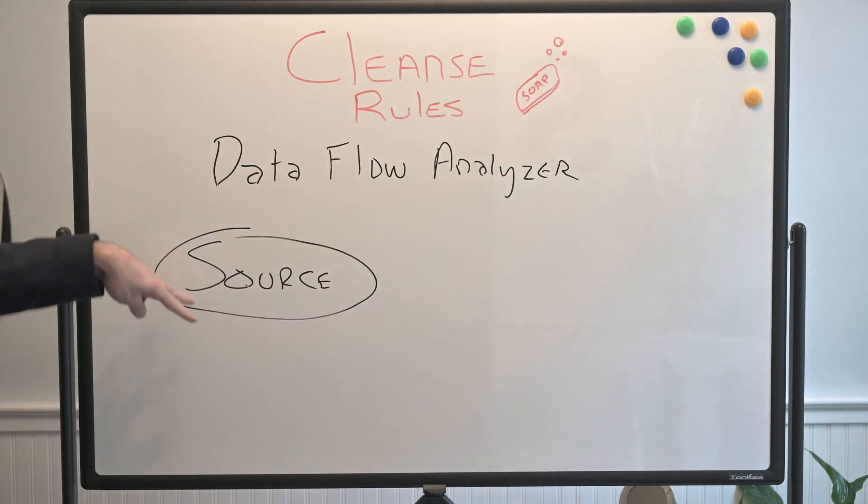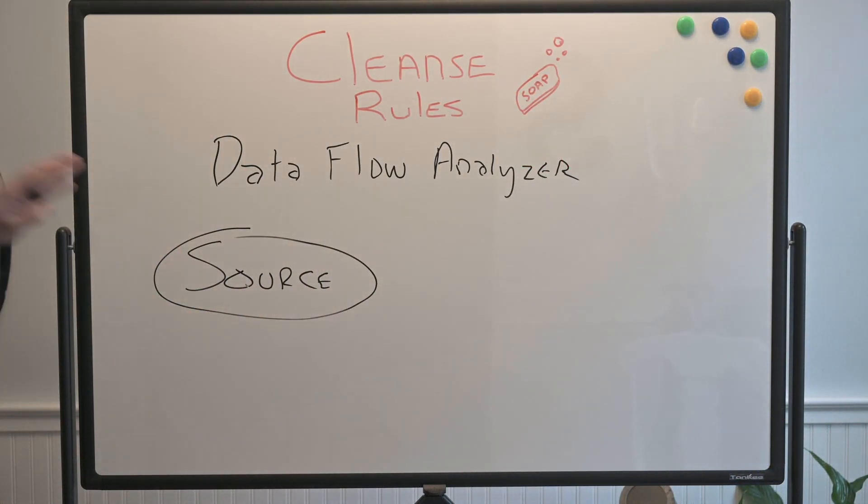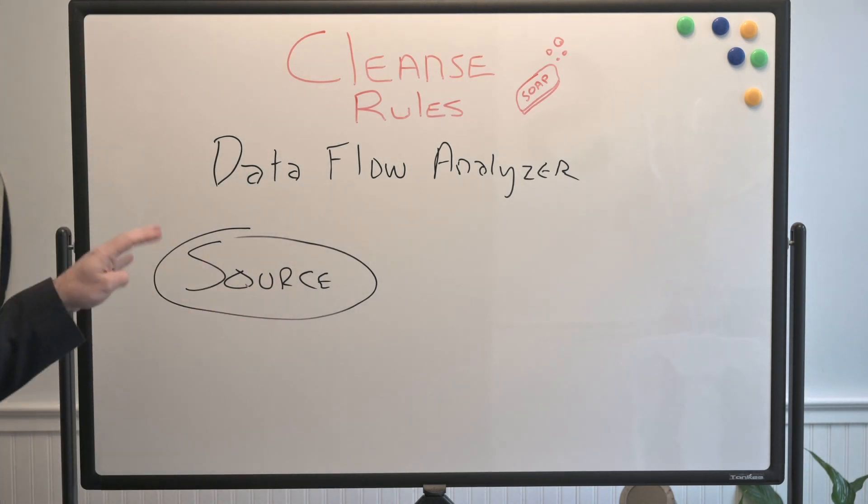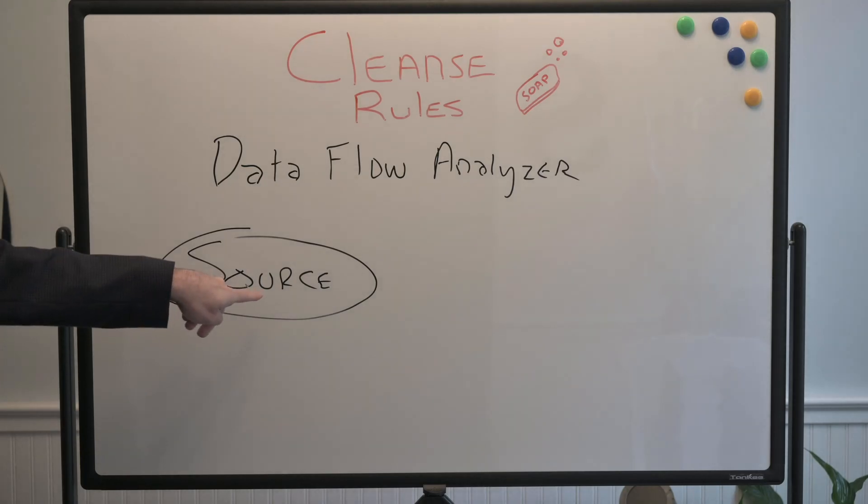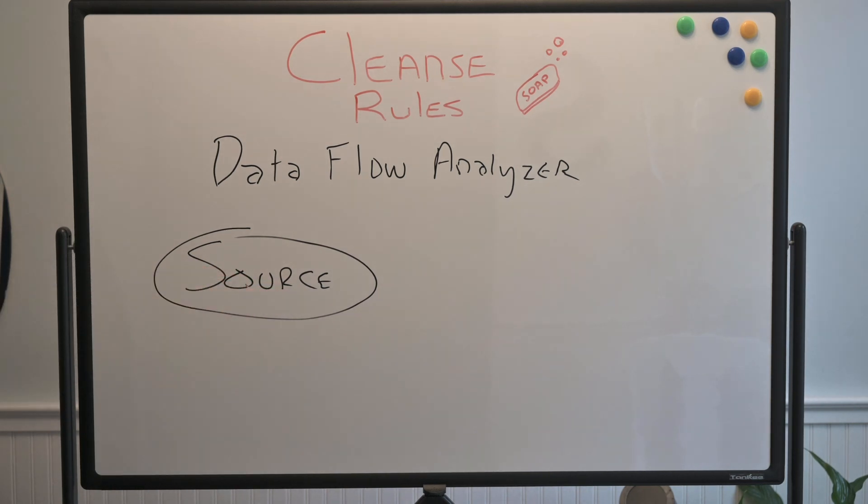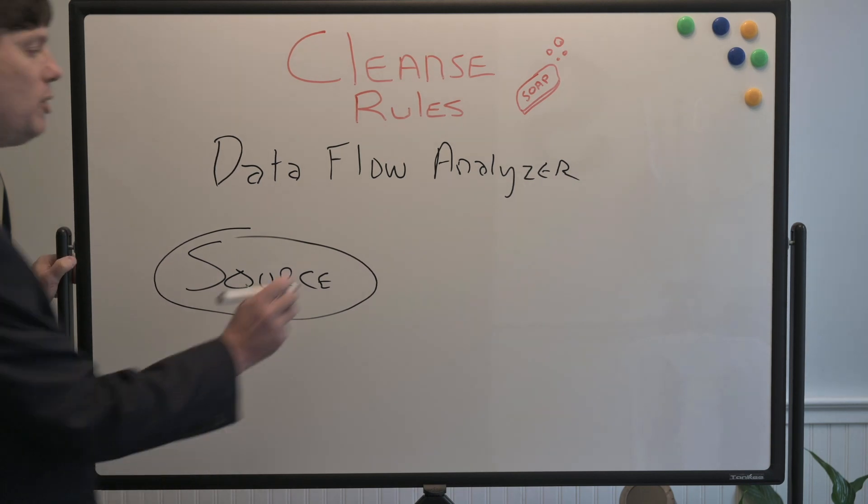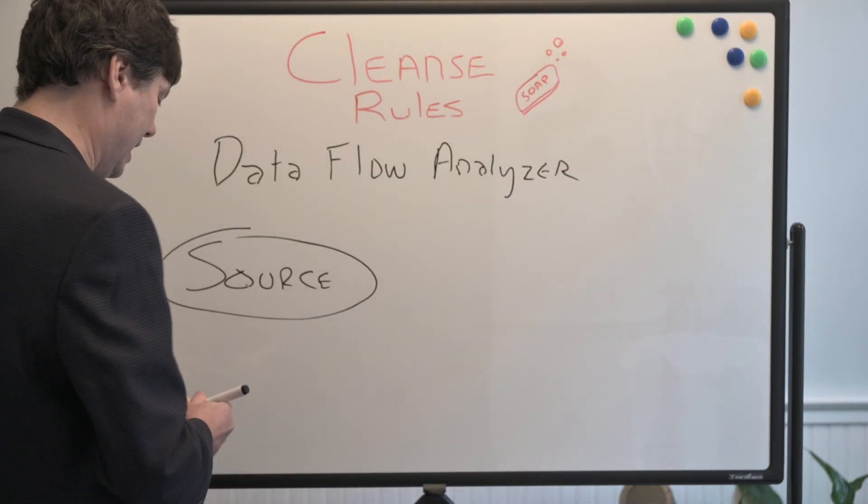The source is our input here. This is where data is coming in from anywhere outside the program, anywhere outside the application, whether it's a user input, whether it's from an external source like an API, any source of data. It's going to be picked up by the data flow analyzer and the data flow analyzer is going to put what we call a taint flag on it.